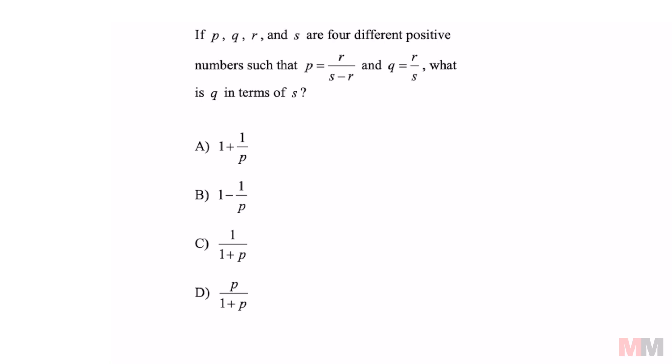If P, Q, R, and S are four different positive numbers such that P equals R over S minus R and Q equals R over S, what is Q in terms of S?